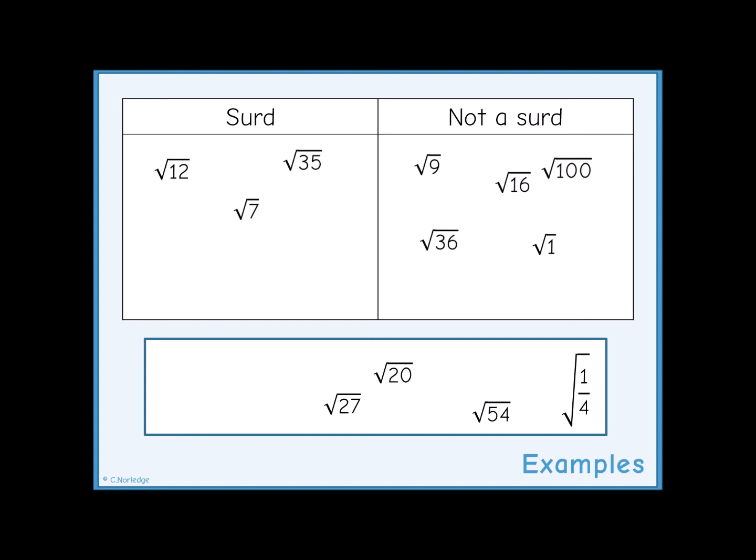27, 20, and 54 are not square numbers, so when you square root these you will get irrational numbers, so messy decimals. So these are all surds.